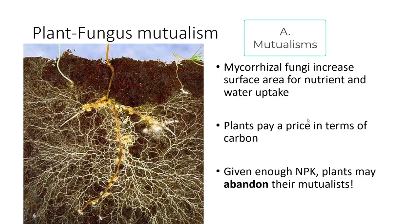Fungi are mutualists with plants — some of them. Mycorrhizal fungi increase the surface area for nutrient and water uptake. Remember the surface area to volume ratio concept: mycorrhizae are one of the best ways to increase surface area. Look also at the grayish spaces between the white threads — those are filled with small mycorrhizae taking up water and nutrients very quickly. Plants pay a price in terms of carbon, and in return fungi give them nitrogen, phosphorus, potassium, and water. However, given enough nitrogen, phosphorus, and potassium, plants might abandon their mutualists and no longer pay the carbon price.